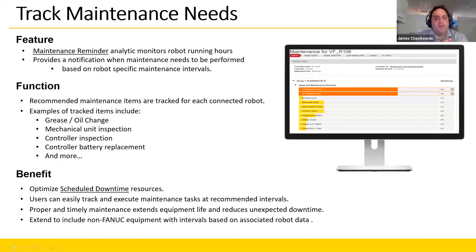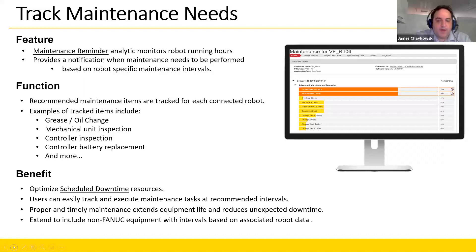ZDT keeps track of your maintenance tasks for each robot and lets you know in advance when maintenance is approaching or coming due. This not only helps extend the life of the robot but allows you to make better use of your resources when planning maintenance tasks. The status bar will change color from yellow to orange as the task deadline approaches, and if you ignore the task it becomes red. Once the maintenance task is completed, you can reset it on the screen. This is a valuable tool for customers with many robots to track all assets, but also valuable for customers with only a couple of robots who don't have dedicated robot technicians.